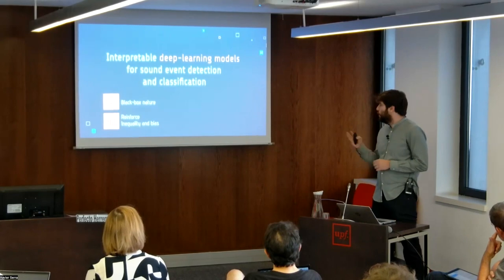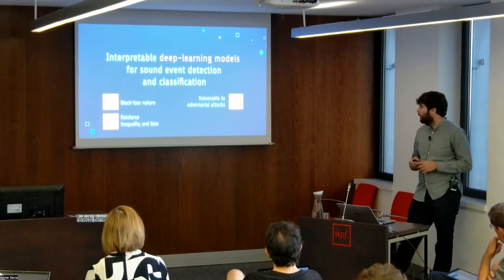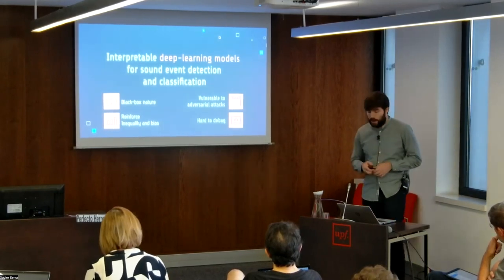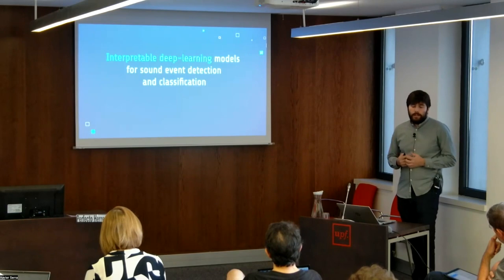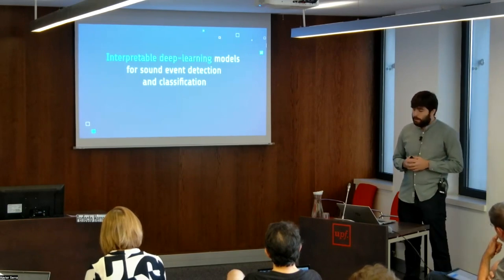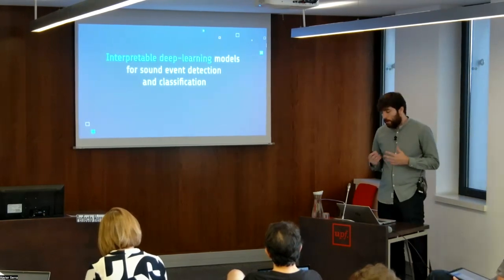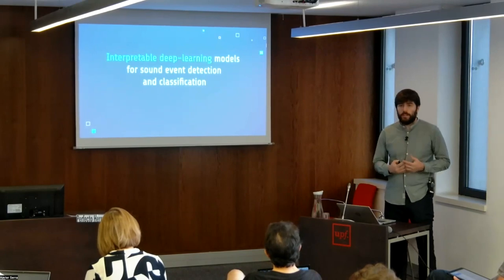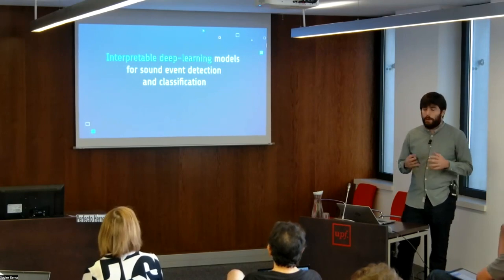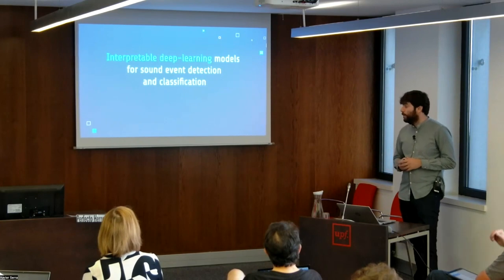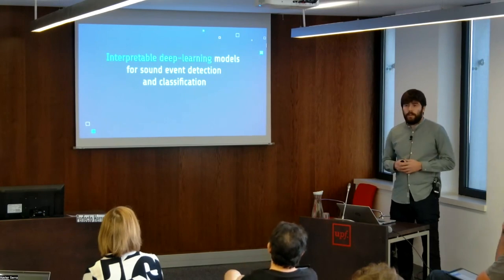This opaque nature may produce unintended effects such as reinforcing inequality and bias, and being vulnerable to adversarial attacks. Besides, these black boxes are hard to debug and troubleshoot. Integrating such algorithms into our daily lives requires wide social acceptance, but these side effects may undermine trustworthiness. In consonance with this, there is a recent surge of research on machine learning models that provide explanations of decisions in some level of detail — this field is commonly known as interpretable machine learning.